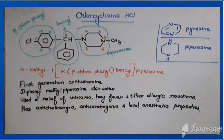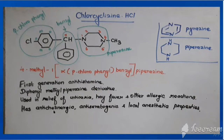The chemical name: piperazine is the parent. The alpha carbon is attached to parachlorophenyl and benzyl, giving: 4-methyl-1-(α-parachlorophenylbenzyl)piperazine. It comes under first-generation antihistamines and is classified as a diphenylmethyl piperazine derivative. It is used for relief of urticaria, hay fever, and other allergic reactions.